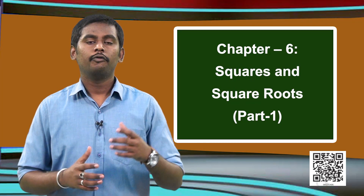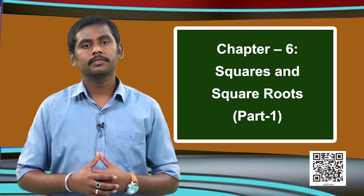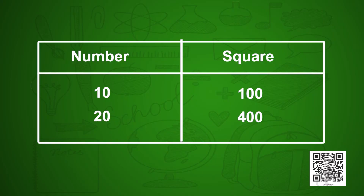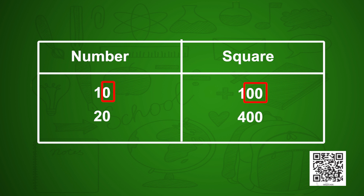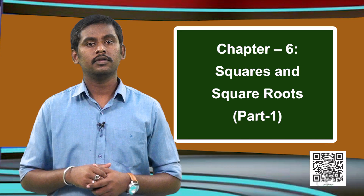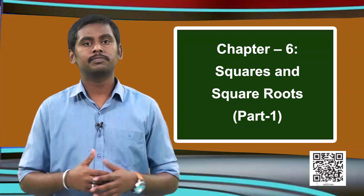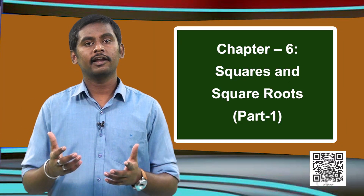Whenever a number ends with 0, let us find out how its square ends. Taking 10: its square is 10×10 = 100, so 10 has one zero but 100 ended up with two zeros. Taking 20: 20×20 = 400, again ended up with two zeros. So whenever a number has one zero in its units place, its square ends up with two zeros.